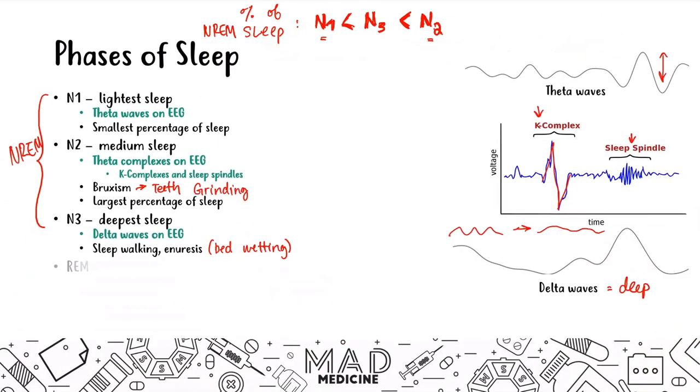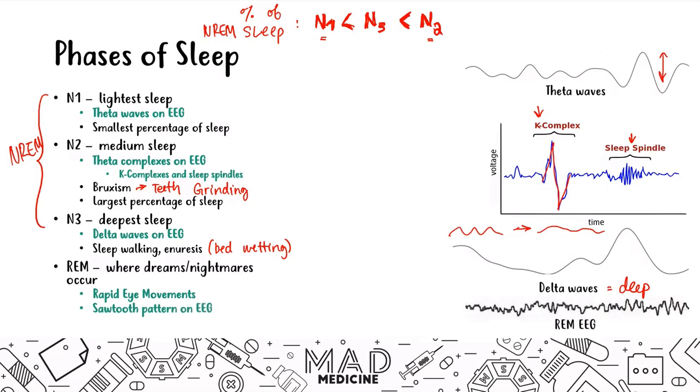After N3, you have REM sleep. This is where your dreams and nightmares reside. This stands for rapid eye movements. In REM sleep, you're going to have a characteristic sawtooth pattern on the EEG. It's very different than all the rest of the patterns. This is also associated with penile tumescence, which is having an erection while someone is asleep.